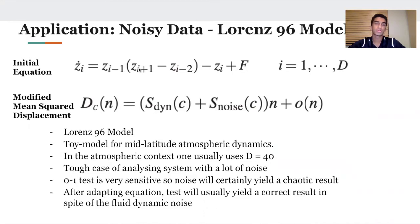This is the Lorenz 96 model, named for Edward Lorenz, and it is used for mid-latitude atmospheric dynamics. For weather forecasting, this would be extremely useful.